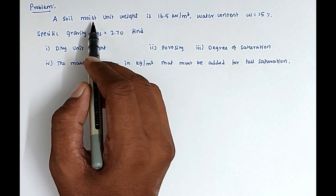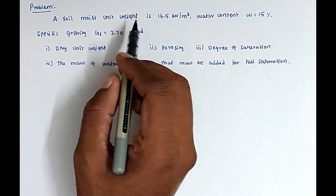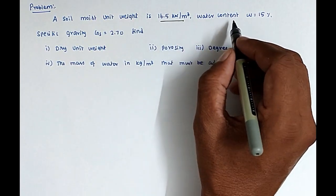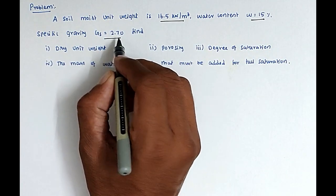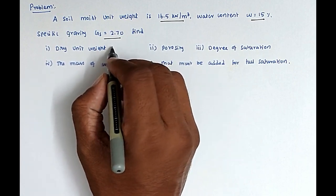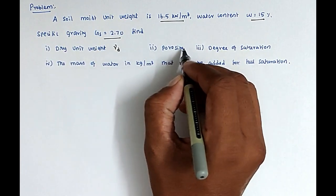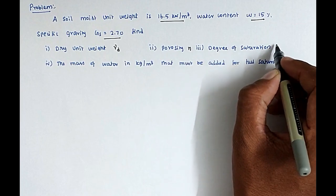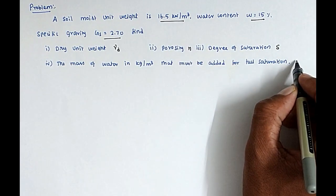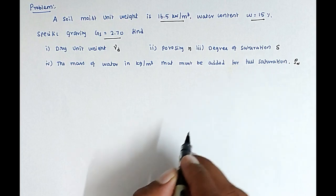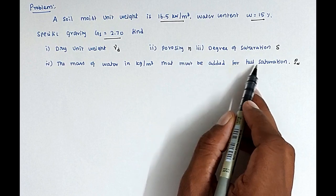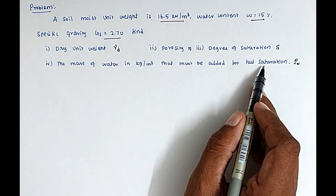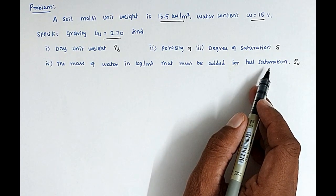So the question is: a soil moist unit weight is 16.5 kN/m³ and water content is 15%, then specific gravity is 2.70. Find out the dry unit weight γD, then porosity N, then degree of saturation S, then the mass of water ρW — that is, the mass of water in kg per m³ that must be added for complete saturation.